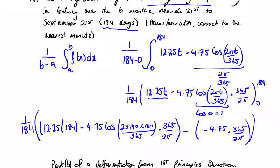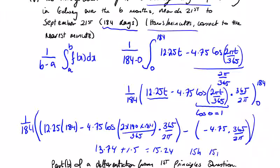The average comes out to (1/184) of these two parts — type this into your calculator. It's giving 13.74 for the first part and 1.5 for the second part, so that's equal to 15.24 hours. Converting: 15 hours and 0.24 × 60 = 15 minutes to the nearest minute. Be careful with the calculator calculation in this question.